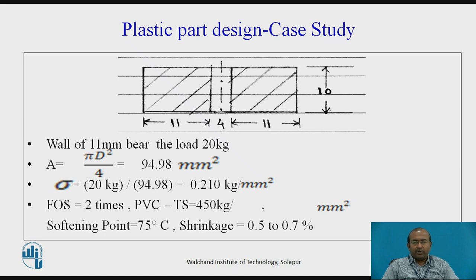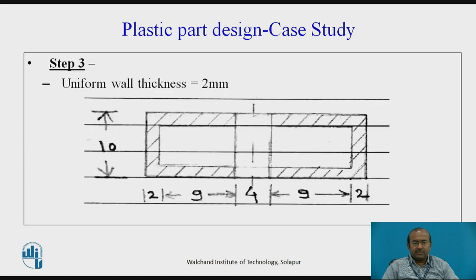The factor of safety we are considering is two times. We have selected the material PVC. The tensile strength is 450 kg/mm². The softening point is 75°C. Shrinkage is about 0.5 to 0.7%. This is the ready-reckoner data we obtained. Uniform wall thickness is to be there, considered about 2 mm.